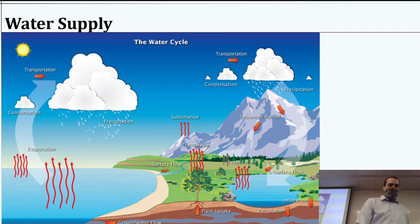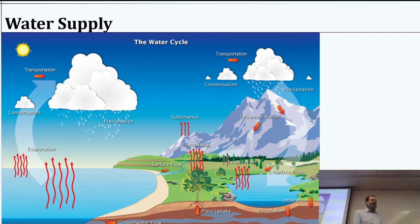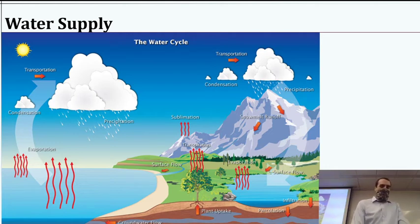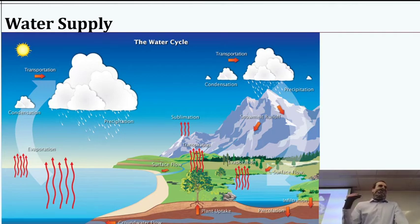That context matters because the types of treatment we design depend on where we're getting the water from. In our class, we're not really making that decision — we'll just have the conditions and the technology. But if you were to show up somewhere and think about what kind of water treatment you need, you'd have to look at what's in the water in the first place: are there a lot of particles? What needs to be treated?